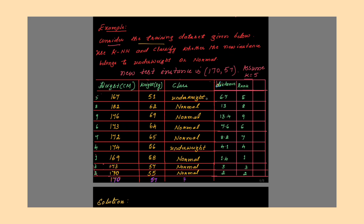In the target label, you have two values: underweight and normal. These are discrete values — underweight, normal, underweight, normal. In the given example, the new instance is given as 170 and 57, and K value is also given here. Assume K equal to 5.